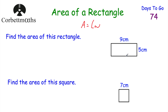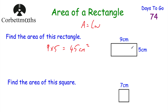To find the area of this rectangle, we just do the length multiplied by the width. So we do 9 multiplied by 5, and 9 times 5 is equal to 45. Remember our units — we're finding the area, so that would be centimetres squared. So the area of this rectangle would be 45 centimetres squared.